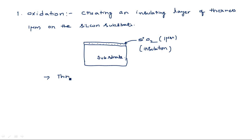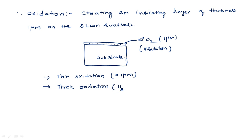There are two types of oxidation: thin oxidation and thick oxidation. Thin oxidation means depositing about 0.1 micrometer thickness, and thick oxidation means creating about one micrometer on the substrate surface. All six fabrication processes are chemical processes and all take place only at high temperatures — such as 500, 600, or 1000 degrees Celsius.